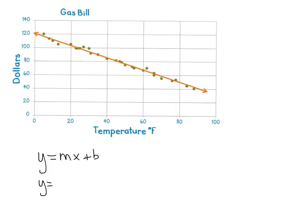So y equals our slope times x plus whatever our y-intercept is. By looking at this graph it appears that our y-intercept right up here is a little bit more than 120, so maybe we can put like 121 on here.